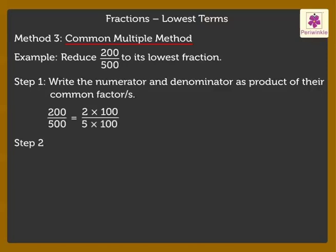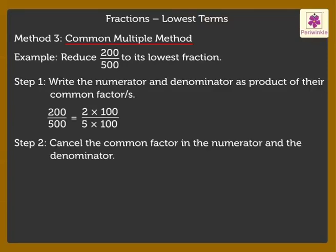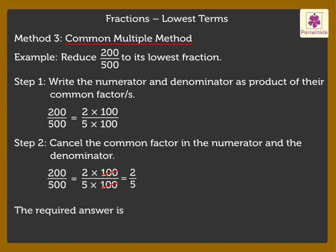Step 2: Cancel the common factor in the numerator and the denominator. Here, cancel the common factor that is 100. Thus, we get the lowest fraction as 2 upon 5. The required answer is 2 upon 5.